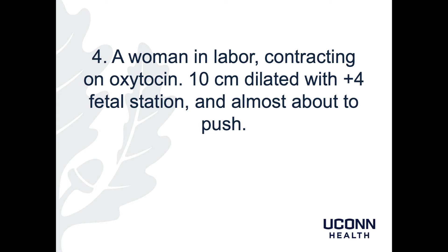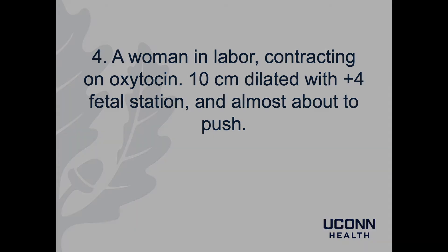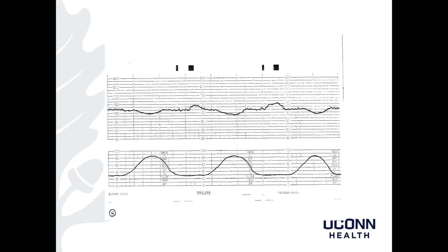Patient 4 is a woman in labor contracting on oxytocin. She is 10 centimeters dilated with plus 4 fetal station and almost about to push. My read: baseline 130s, moderate variability, accelerations are present, and there are positive recurrent early decelerations. This is Category 1. Those early decelerations are consistent with head compression from the head being so low with the patient just about to push.